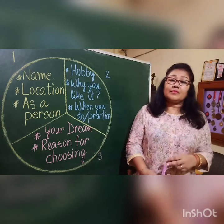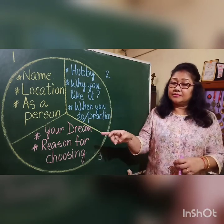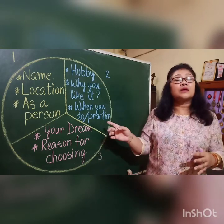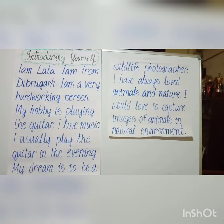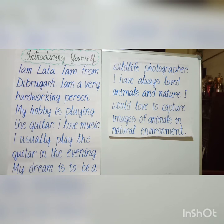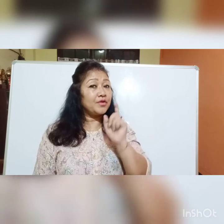Now that we have discussed the three parts in detail, let's see how the entire introduction looks when put together: Hello, I am Lata. I am from Debrugge. I am a very hardworking person. My hobby is playing the guitar — I love music and I usually play in the evening. My dream is to be a wildlife photographer. I have always loved animals and nature, and I would love to capture images of animals in their natural environment. Don't you think that is a very good English introduction? Now try to introduce yourself in English — keep it short and clear, and practice at home today.